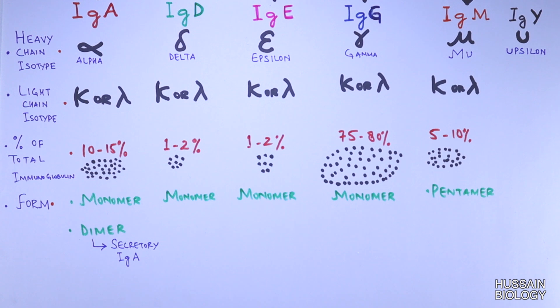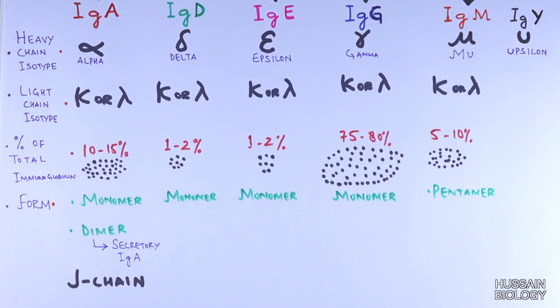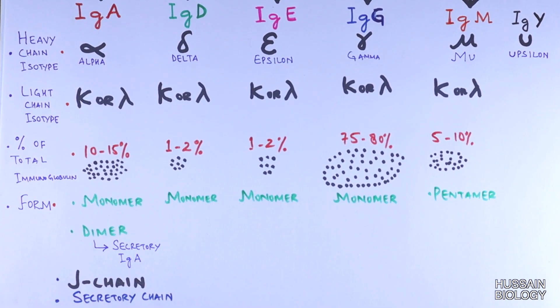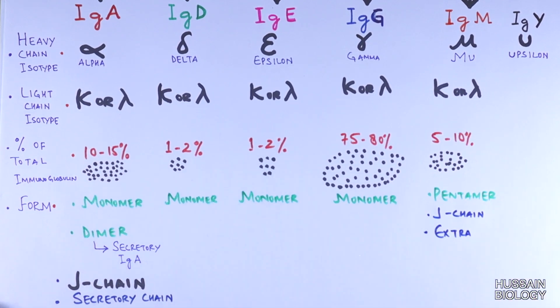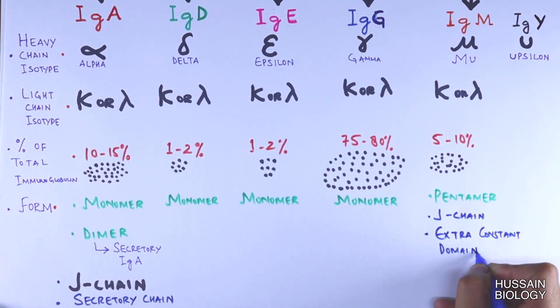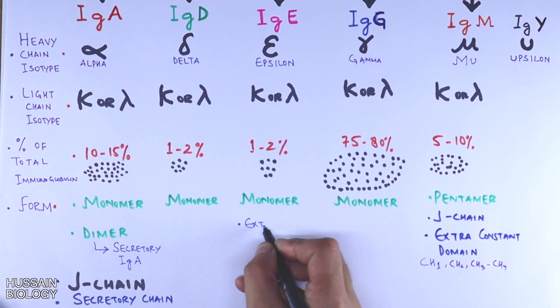Another important thing to note here is that there are additional structures added to the IgA dimer, including the J chain which joins the two monomers of IgA, and there is also a secretory chain or secretory component. In the same way, immunoglobulin M also has J chain, and there is also presence of an extra constant domain in its heavy chain,